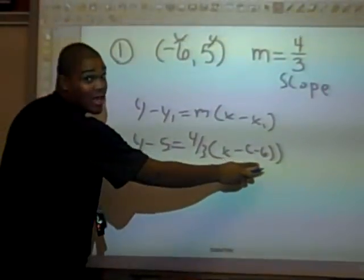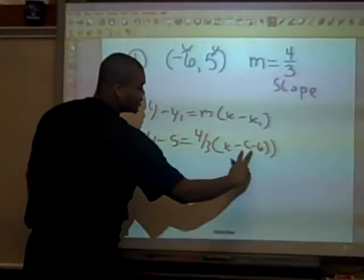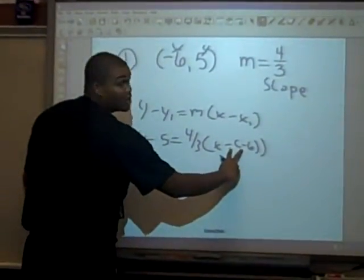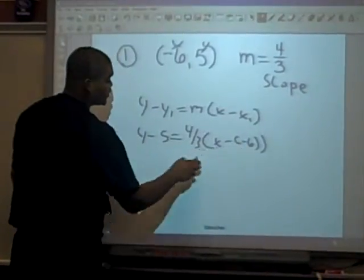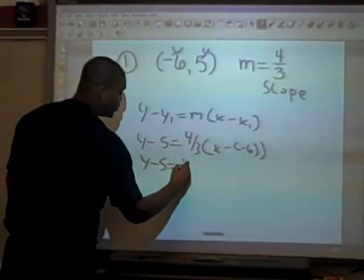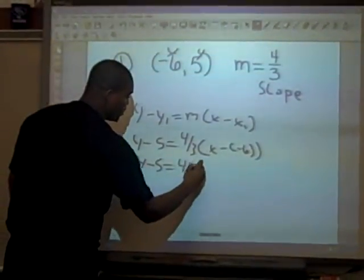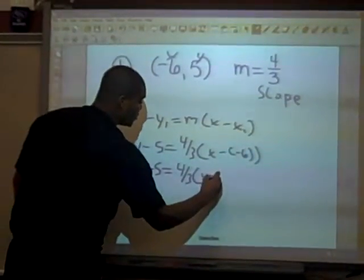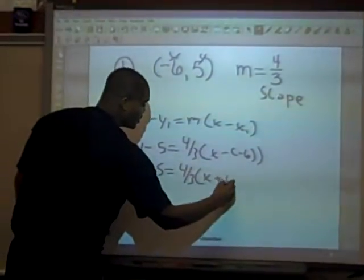So, because this is a negative right here, we have to turn this into a positive because these two negatives are together. So, we'll just rewrite the problem. Y minus 5 equals 4 over 3, X plus 6.